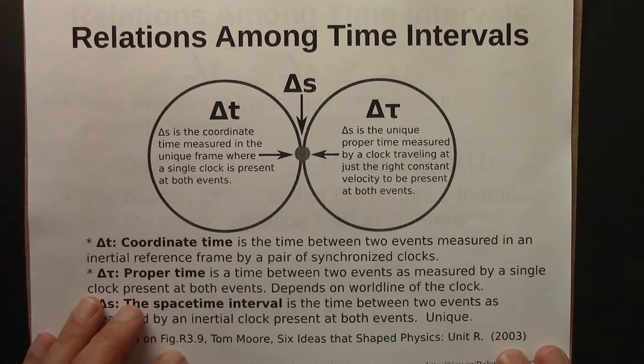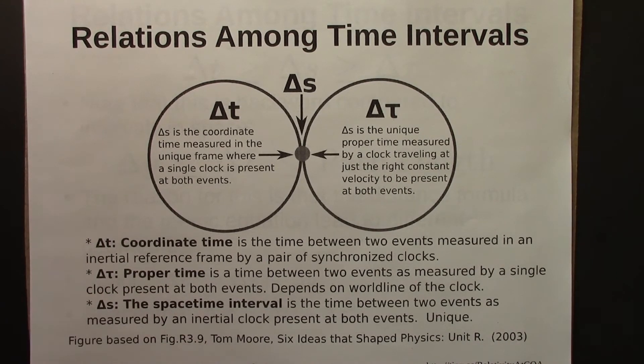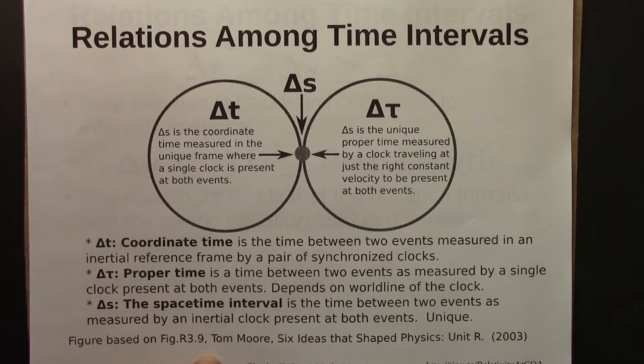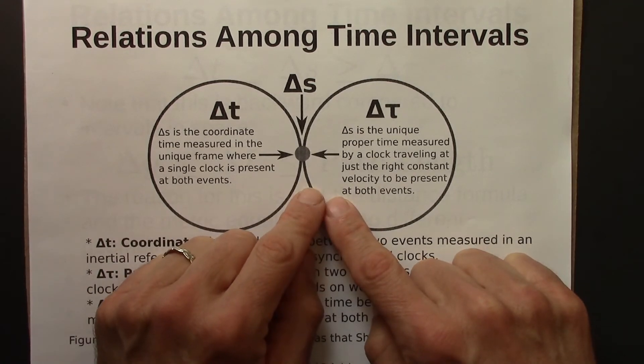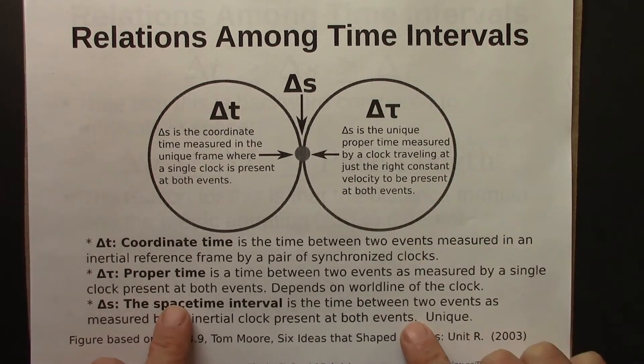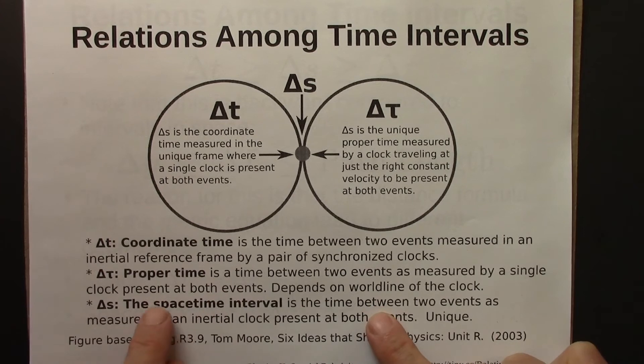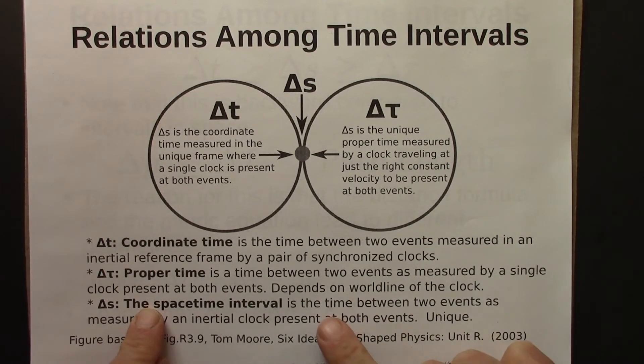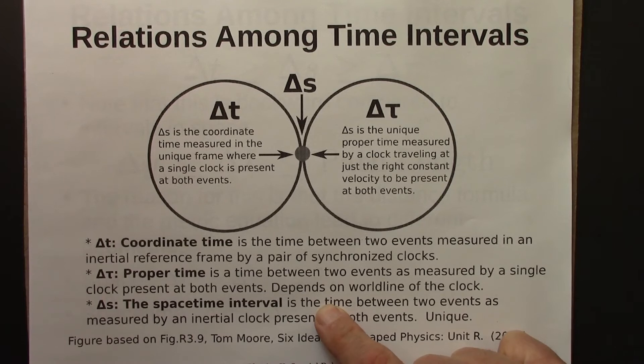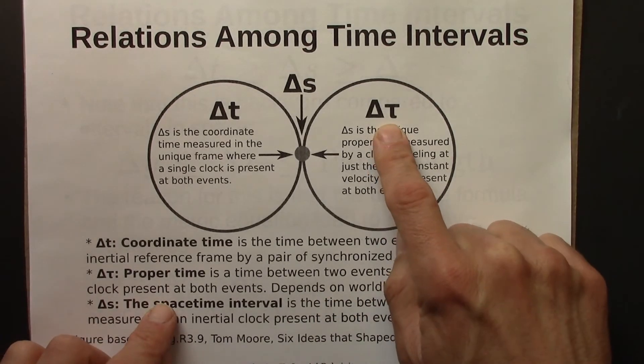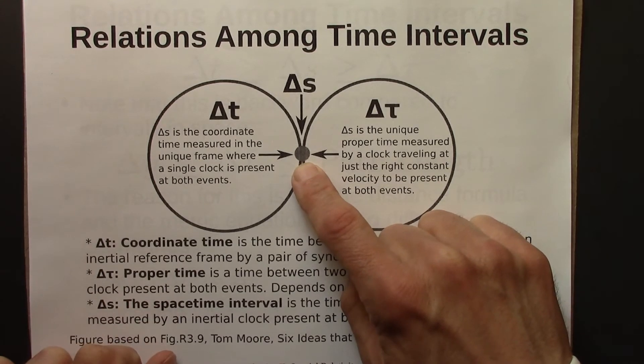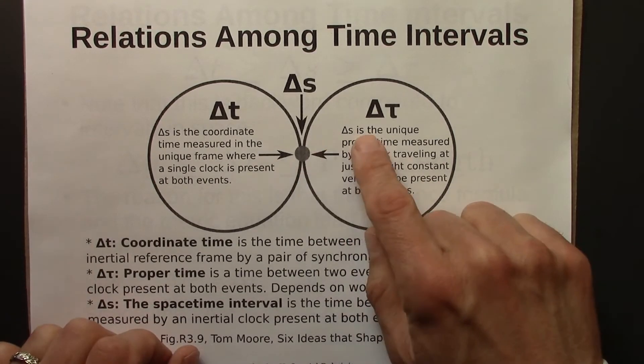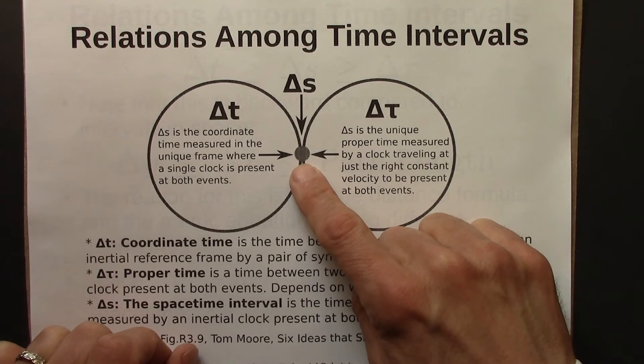All right. So then we talked about relations among time intervals. And we went through this figure. And again, this figure is based on one from Tom Moore's book. So delta tau, that's the time interval measured between two events, measured by a single clock that's present at both events. And that will depend on the world line of the clock. Different world lines give different delta tau's. But there's a special world line, the straight world line, constant velocity. And in that case, that proper time is also the space-time interval.